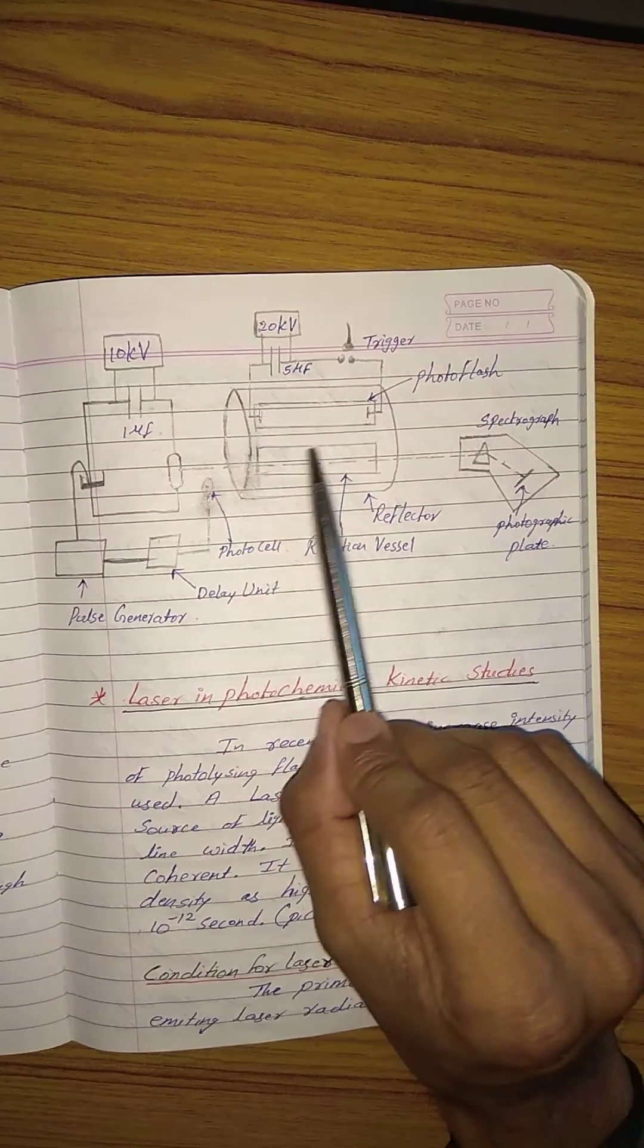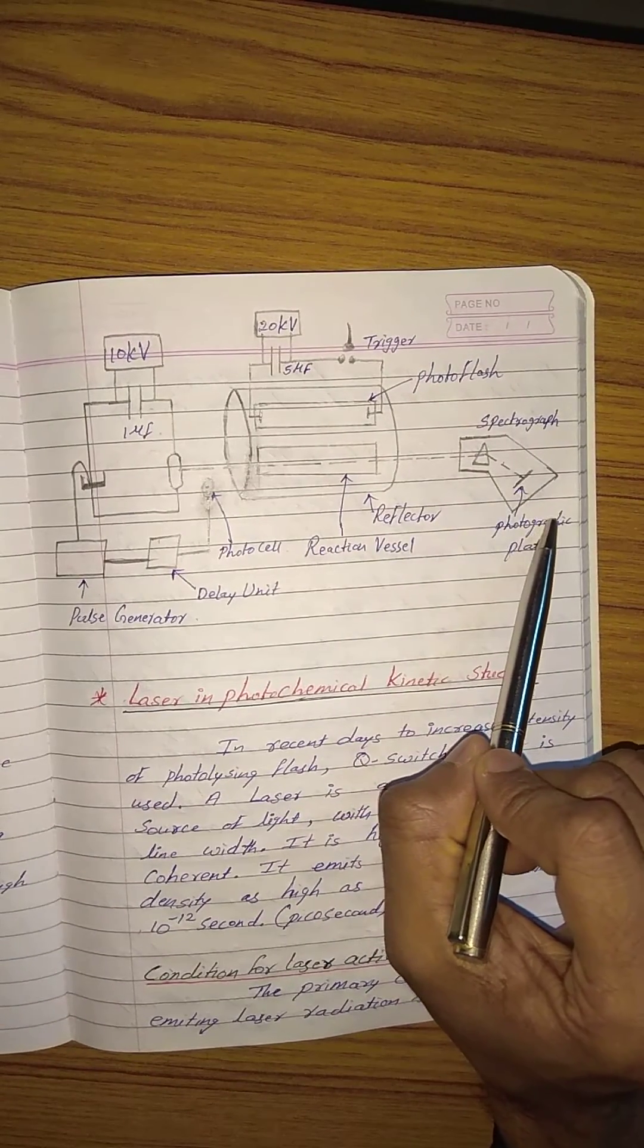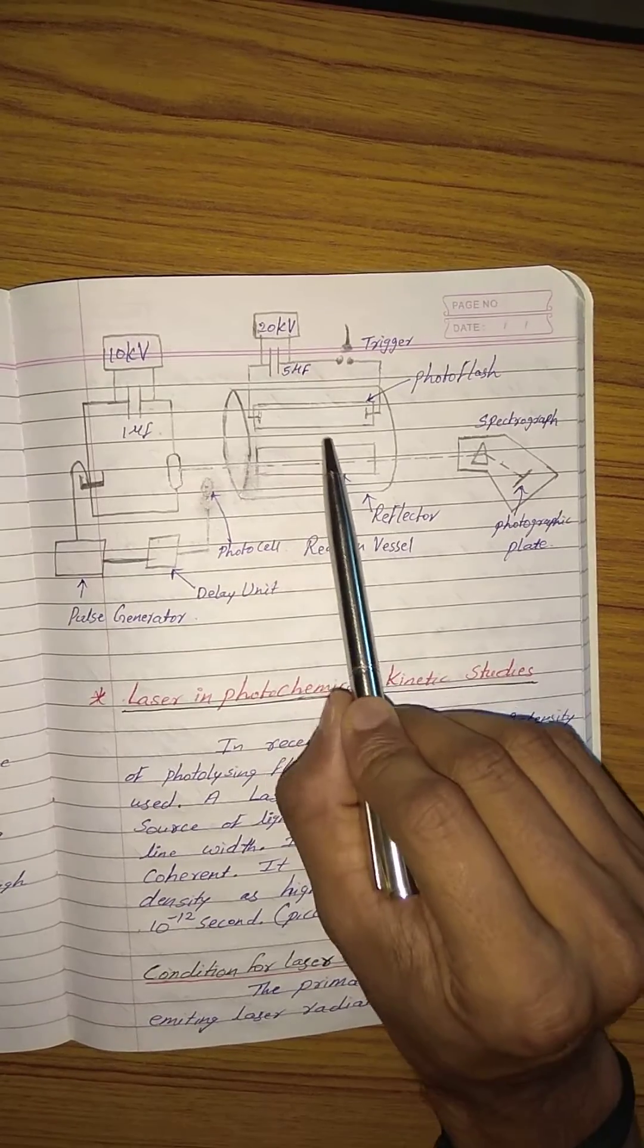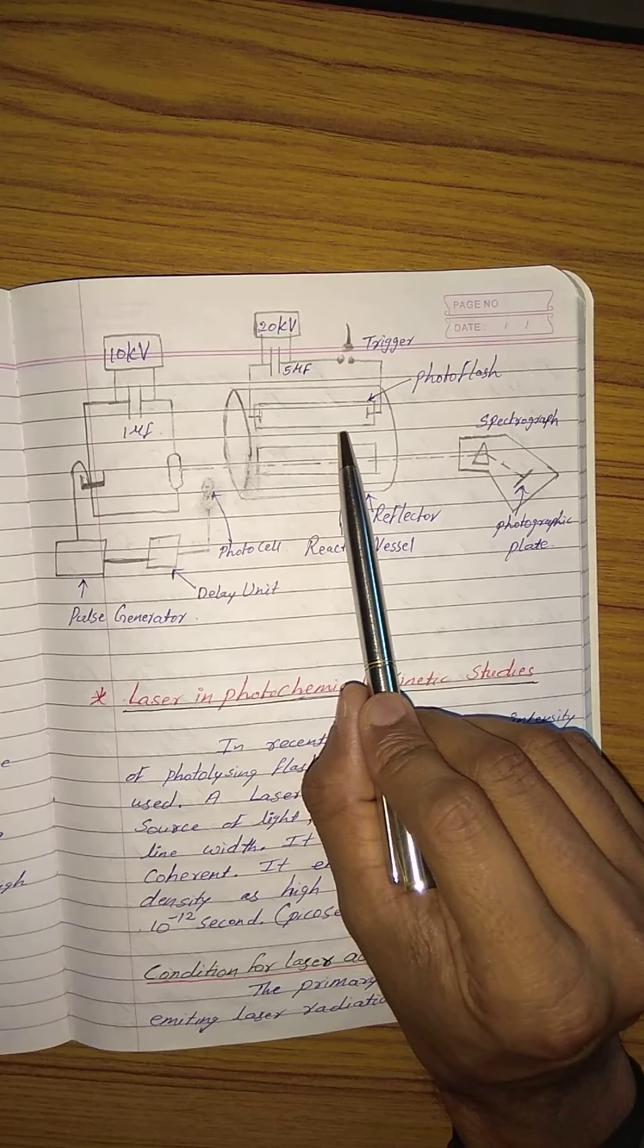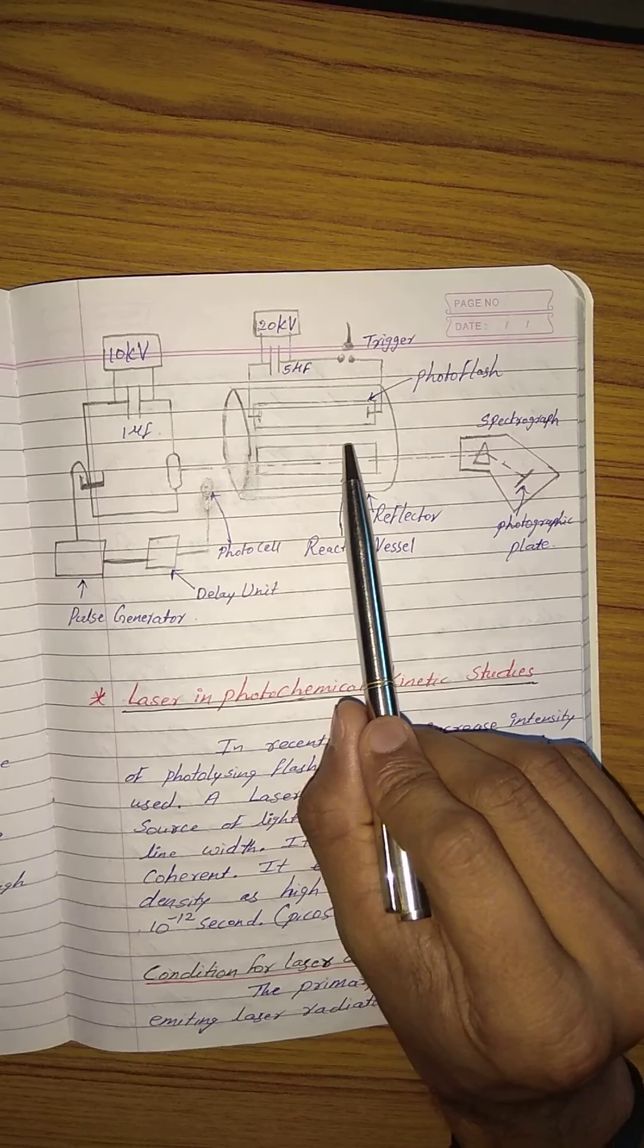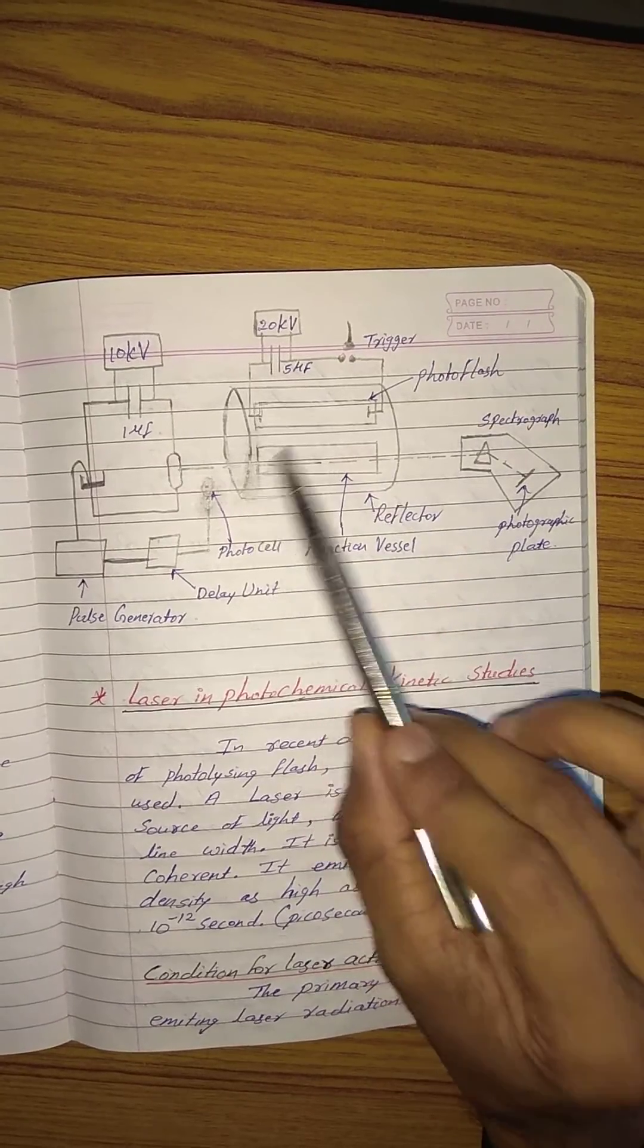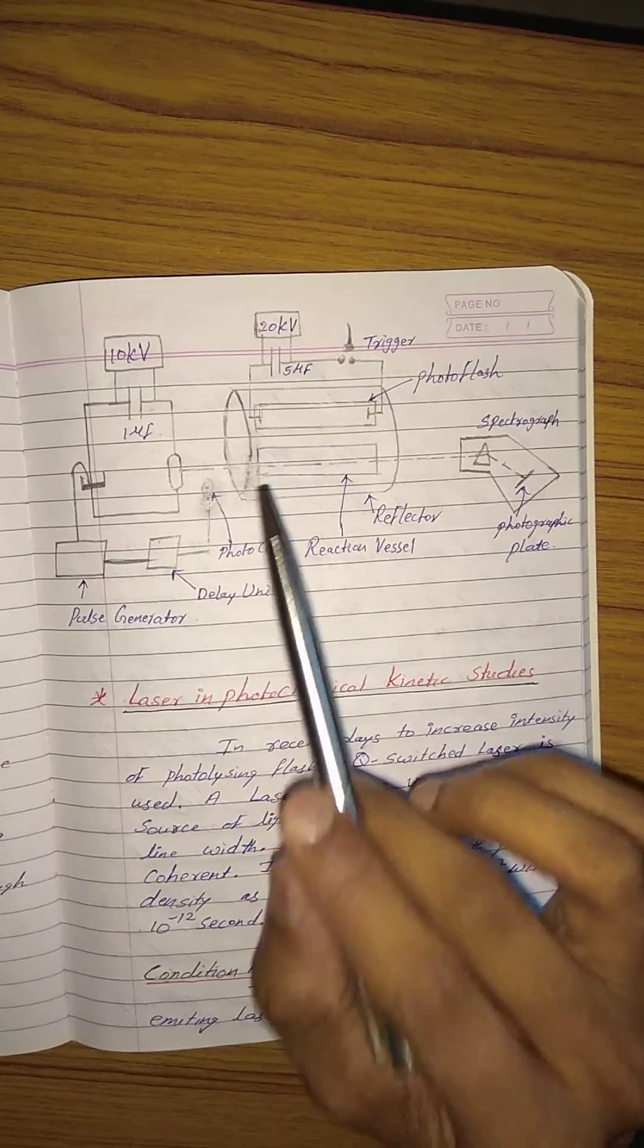This method is called flash photolysis. The duration of the photolytic flash is set to 1 to 10 microseconds. The flash generated produces very high intense light with energy around 20 to 2000 joules within 1 to 100 microseconds. This flash photolysis method is commonly used in photochemical studies.